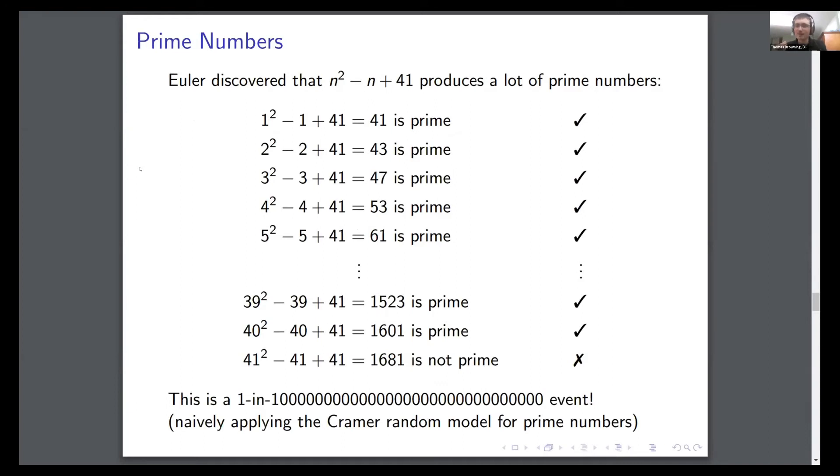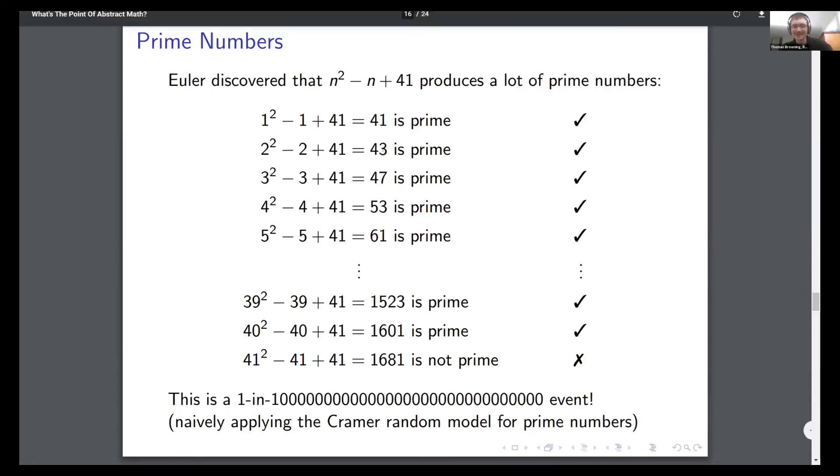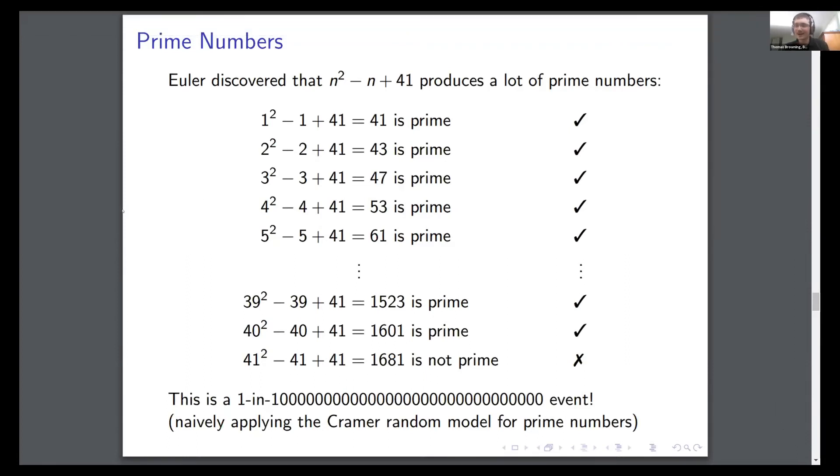Like n squared minus n plus 43. If you check whether the numbers it produces are prime, it's a bit hit or miss because prime numbers are unpredictable. Sometimes you get lucky and it's prime. Sometimes you get unlucky and it's not prime. You can't say for certain. But there's this really weird example by Leonard Euler, where there's this polynomial, n squared minus n plus 41. And it happens to produce a string of 40 primes in a row.